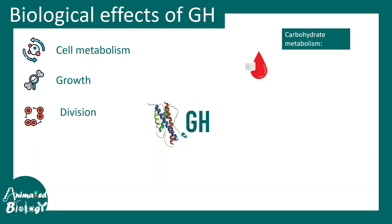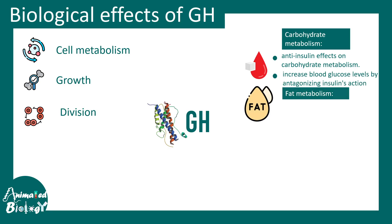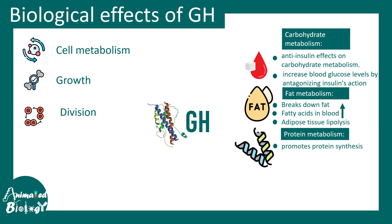Growth hormone has an anti-insulin-like effect on carbohydrate metabolism, meaning it elevates blood glucose levels. It alters fat metabolism by breaking down fat, increasing fatty acids in the blood, and promoting lipolysis. In terms of protein metabolism, it promotes protein anabolism, essentially building more muscle. Overall, it has a profound effect on the entire metabolism.